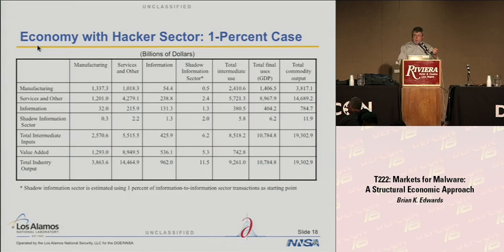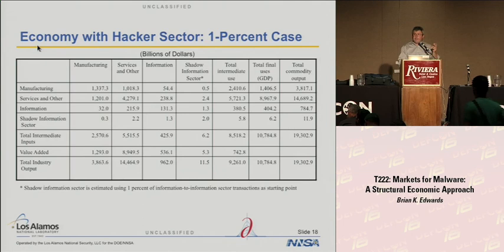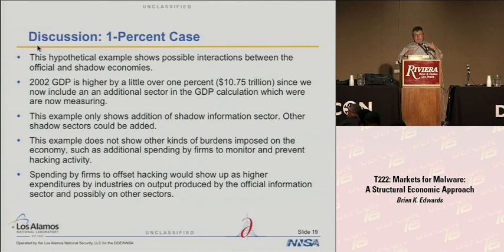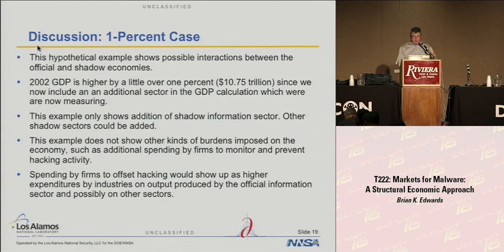These are very preliminary estimates of how big the shadow sector is. The GDP is going to be slightly larger now because we're measuring economic activity that we weren't measuring before. This is a very rough preliminary estimate of what the total economy would look like with shadow economic activity added. Peter Norton, I think, probably owes his existence to the shadow economy. I'm not really talking about additional burdens this activity imposes — I'm just looking at it very coldly and crudely as an economist.